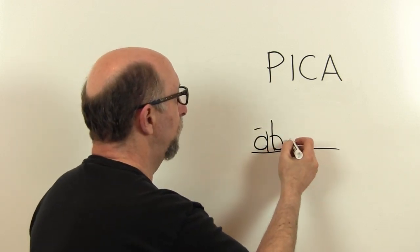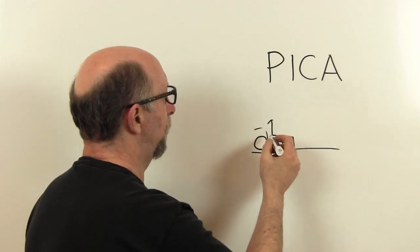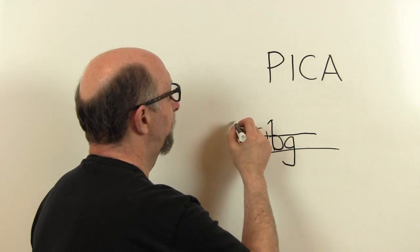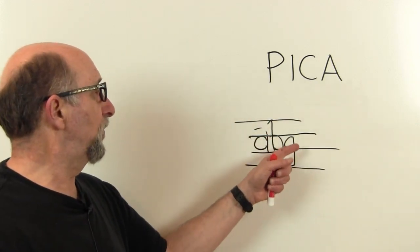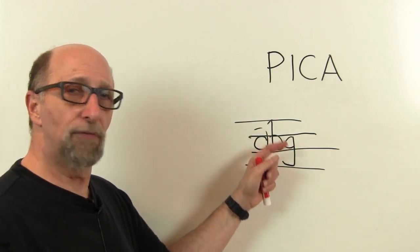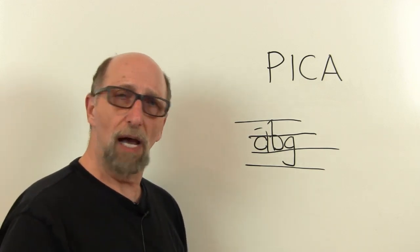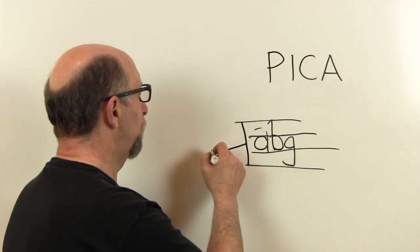Obviously, we're going to have letters like A that sit right on the line, and then we're going to have letters like B, and then we're also going to have letters like G that maybe go below the line, and B obviously goes above the line. What we have here is a whole bunch of measurements. We've got the X height. Then we've got ascenders that go above the line. Then we've got descenders that go below the line.